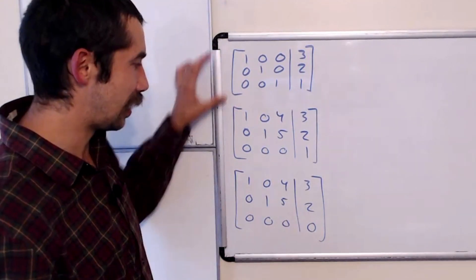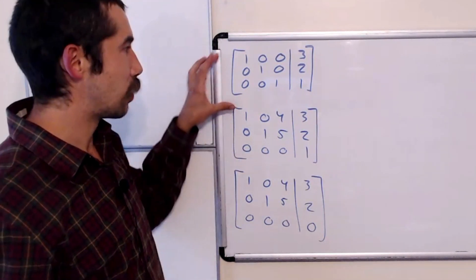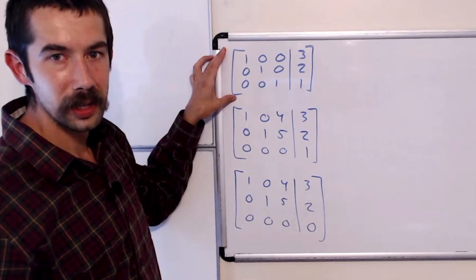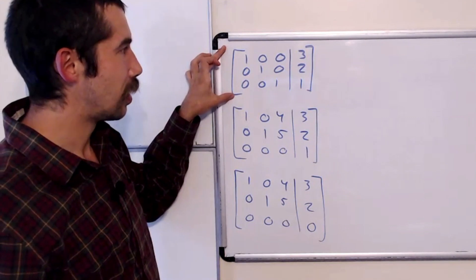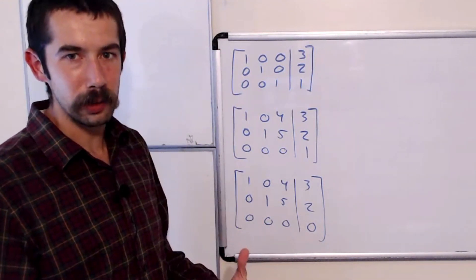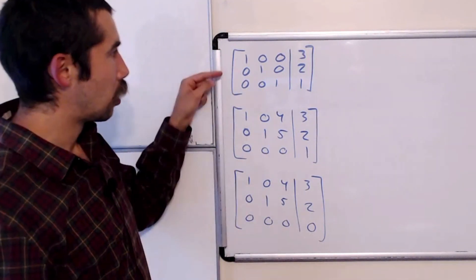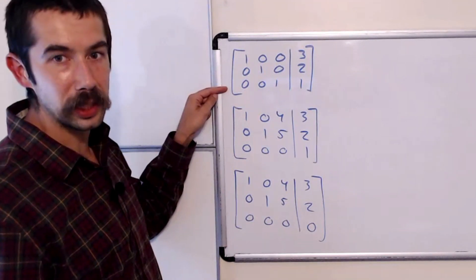So suppose we had, and these are three different examples, suppose we row-reduced our matrix to this matrix here. What is the solution to its corresponding system? Well, what you do is you just read off each of the rows.